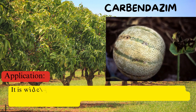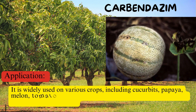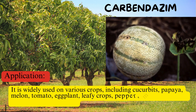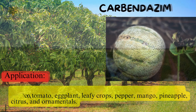It is widely used on various crops, including cucurbits, papaya, melon, tomato, eggplant, leafy crops, pepper, mango, pineapple, citrus, and ornamentals.